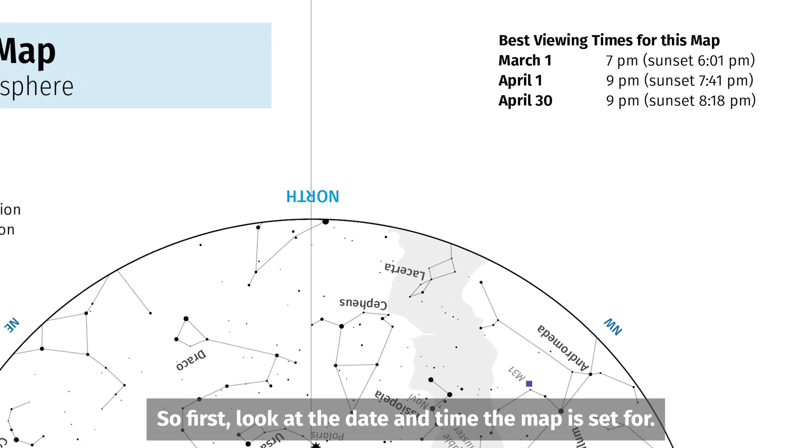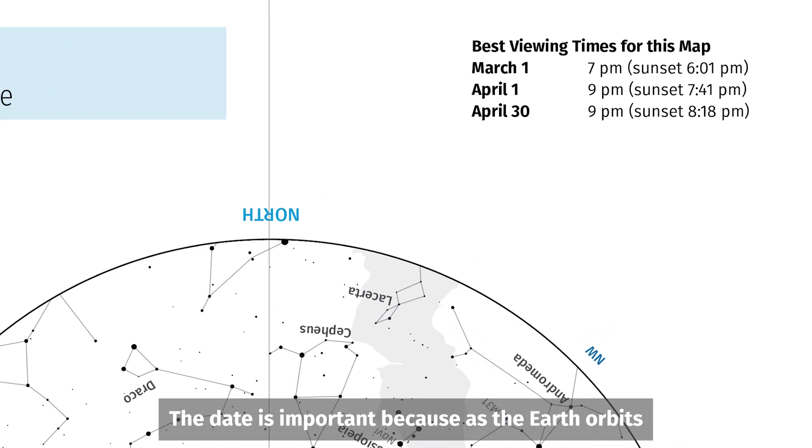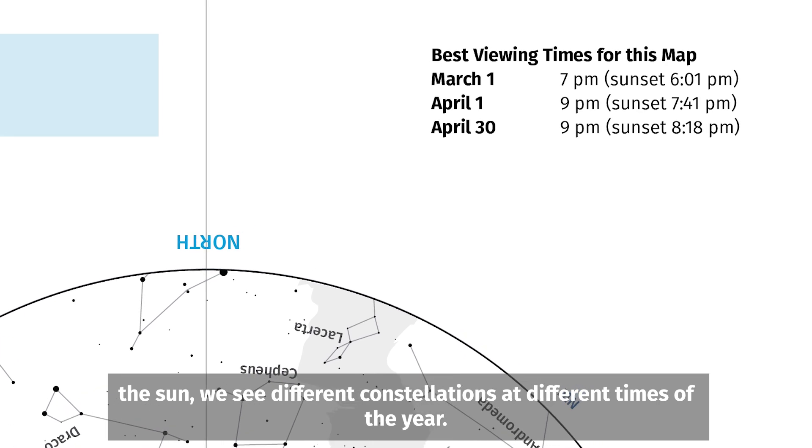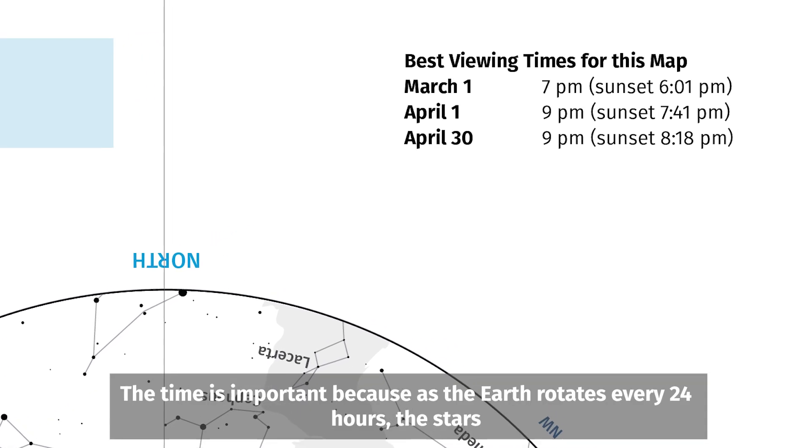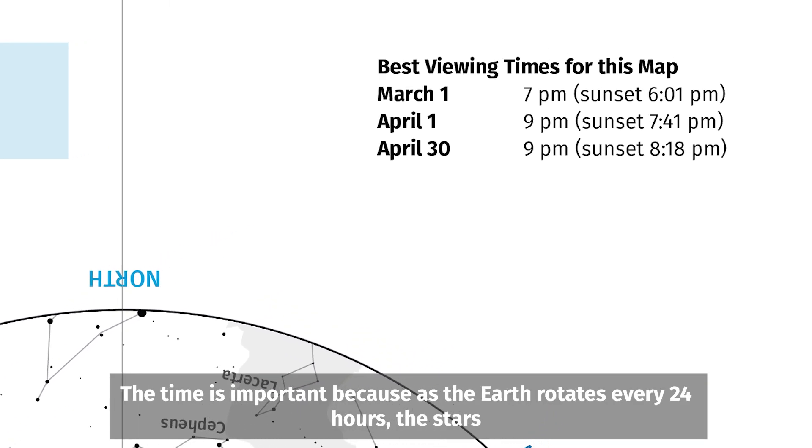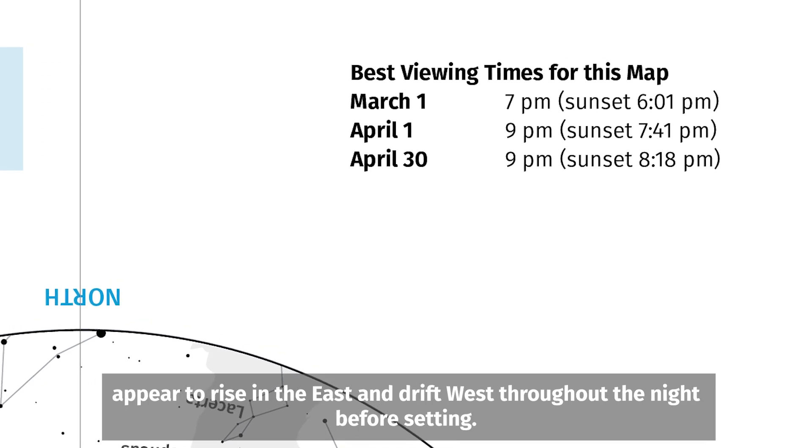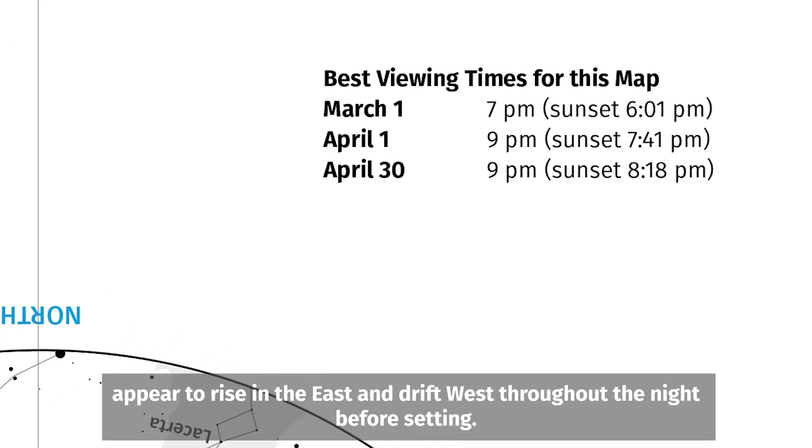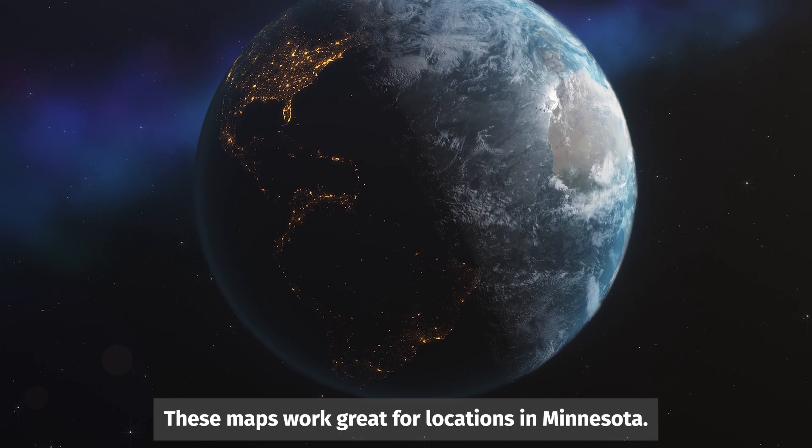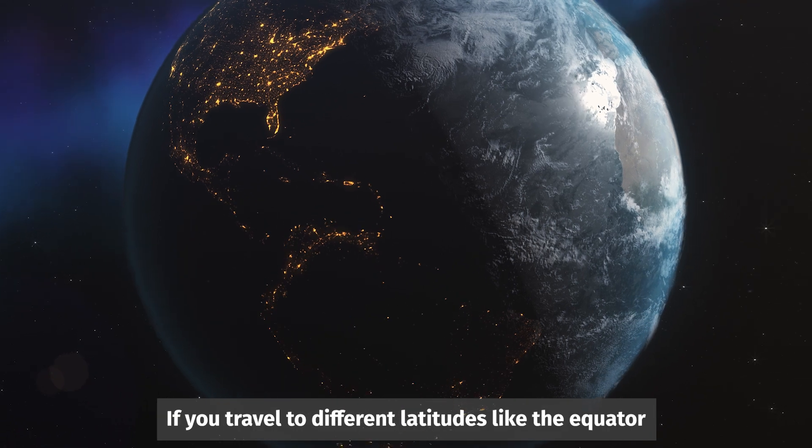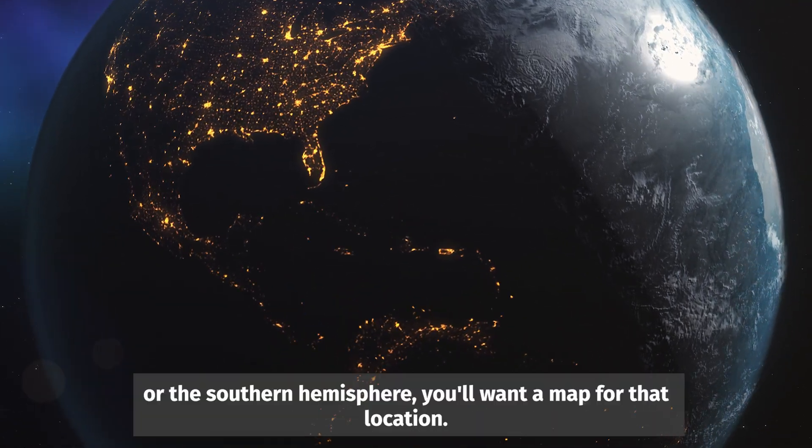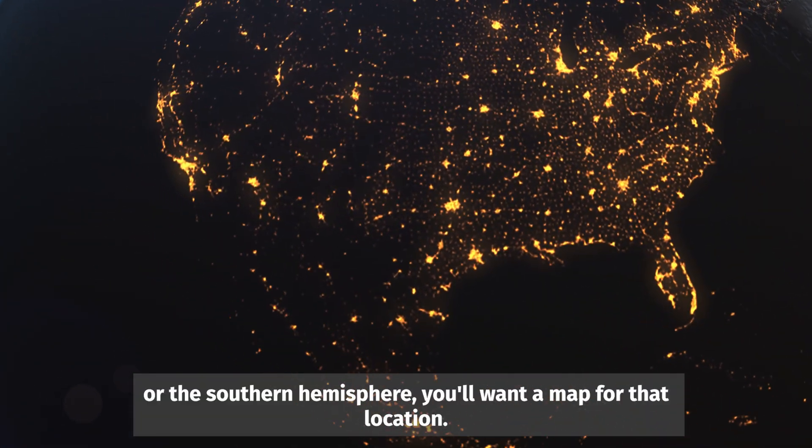First, look at the date and time your map is set for. The date is important because as the Earth orbits the sun, we see different constellations at different times of the year. The time is important because as the Earth rotates every 24 hours, the stars appear to rise in the east and drift west throughout the night before setting. These maps work great for locations in Minnesota. If you travel to different latitudes like the equator or the southern hemisphere, you'll want a map for that location.